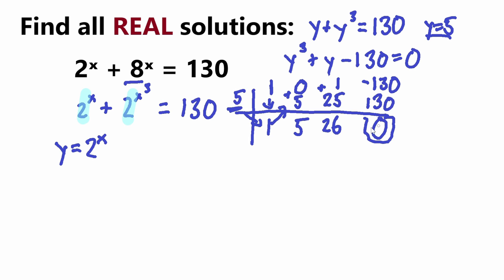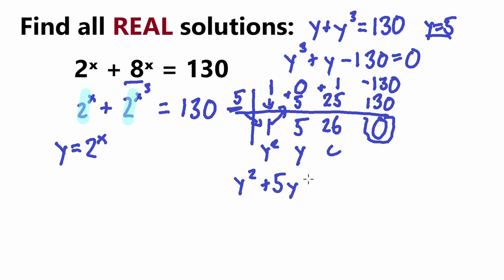We ignore the zero remainder and use the remaining coefficients 1, 5, and 26 to write a new quadratic equation: y² + 5y + 26 = 0. Now we need to find any additional zeros of this equation.